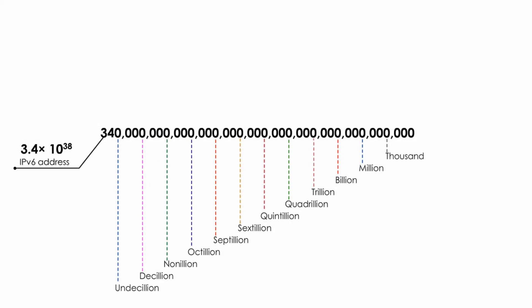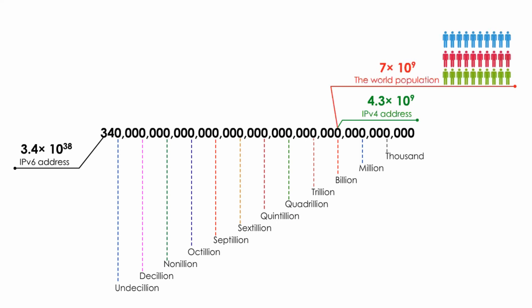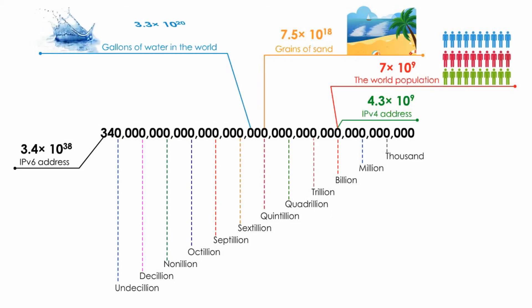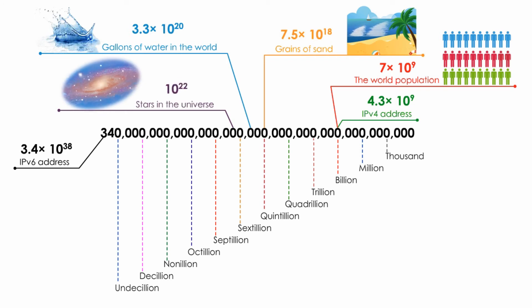Let's compare IPv6 space size with other objects. The number of IPv4 addresses is about 4.3 billion. The current world population is about 7 billion. The estimated number of grains of sand on all the beaches in the world is 7.5 quintillion. The estimated number of gallons of water in the world is 330 quintillion. The estimated number of stars in the universe is 10 sextillion. But compared with the majestic number of IPv6 addressing space and size, all those huge numbers seem very tiny.